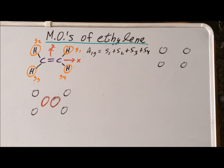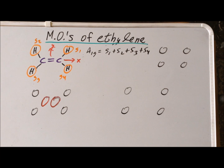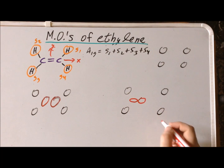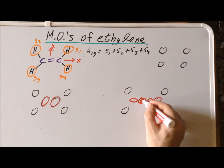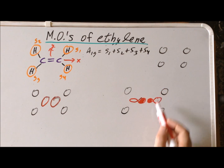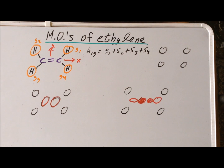The second A1g combination, which is higher in energy, again has all four hydrogen atoms with exactly the same phase, but now we have them bonding with the 2px orbitals on carbon. All interactions are net bonding — carbon-hydrogen and carbon-carbon. Since the 2px orbitals are higher in energy than the 2s orbitals, this molecular orbital is higher in energy, even though both have A1g symmetry.